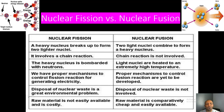Now let's look at the differences between nuclear fission and nuclear fusion. In nuclear fission, a heavy nucleus is broken down into smaller, lighter nuclei; in nuclear fusion, two light nuclei are combined to form a heavy nucleus. Nuclear fission involves a chain reaction while nuclear fusion does not. In nuclear fission the heavy nucleus is bombarded with neutrons; in nuclear fusion, light nuclei are heated to an extremely high temperature to fuse together. We do have the proper mechanisms to control fission reactions for generating electricity.